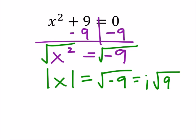Square root of 9 is a perfect square. So I have i times 3, but I would rearrange that to be 3i.